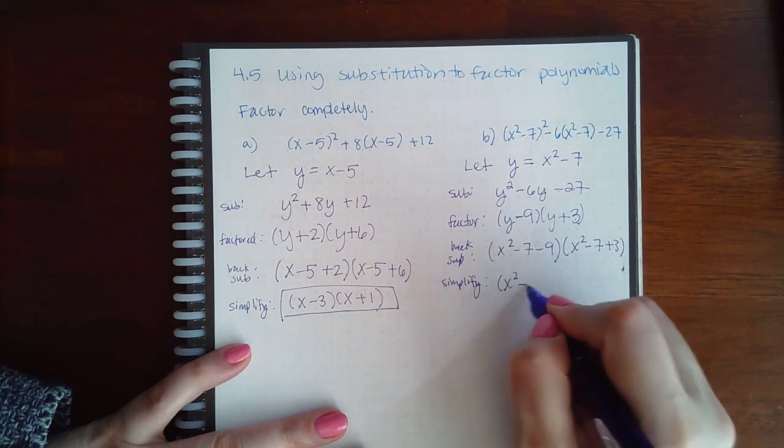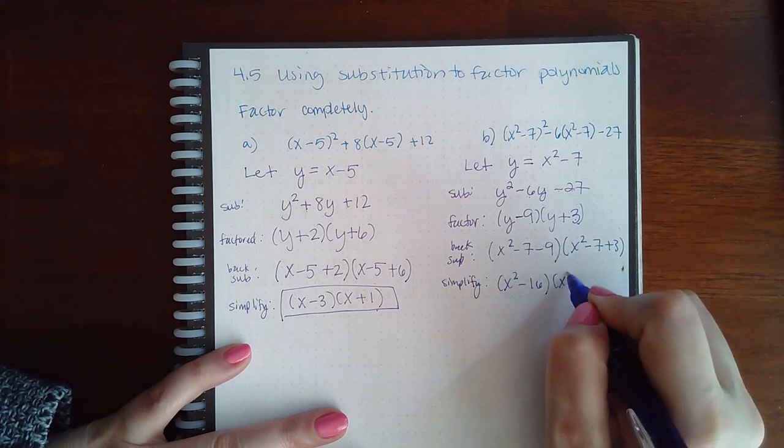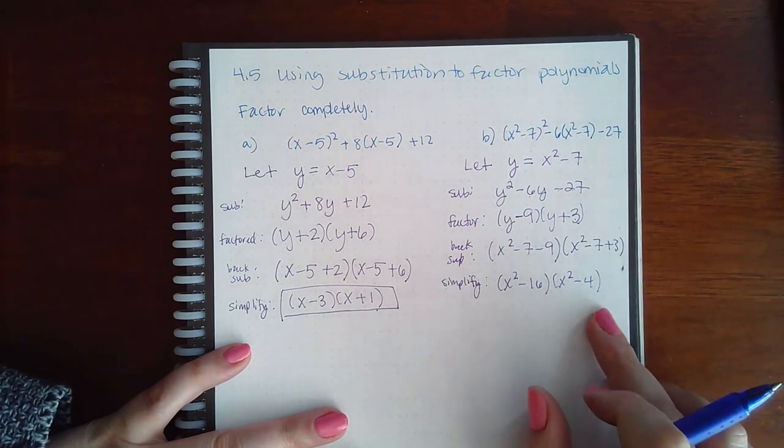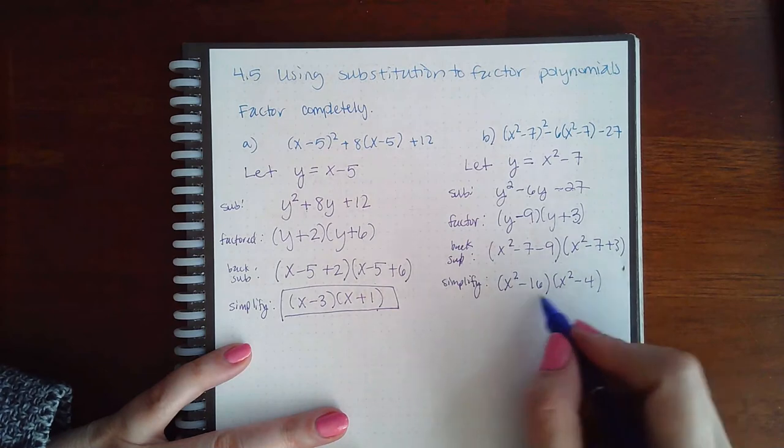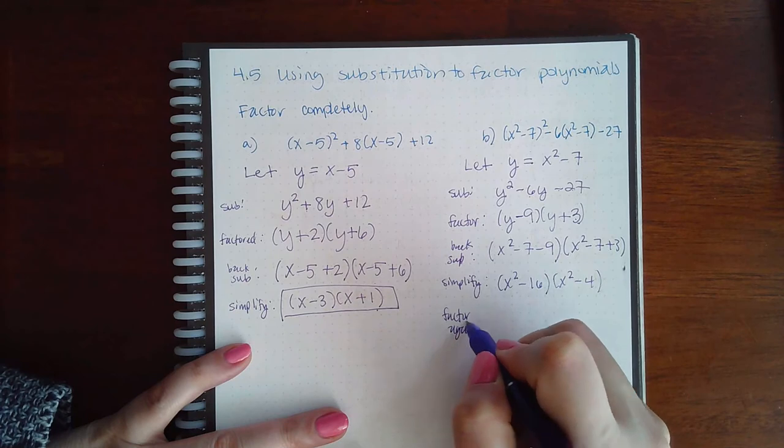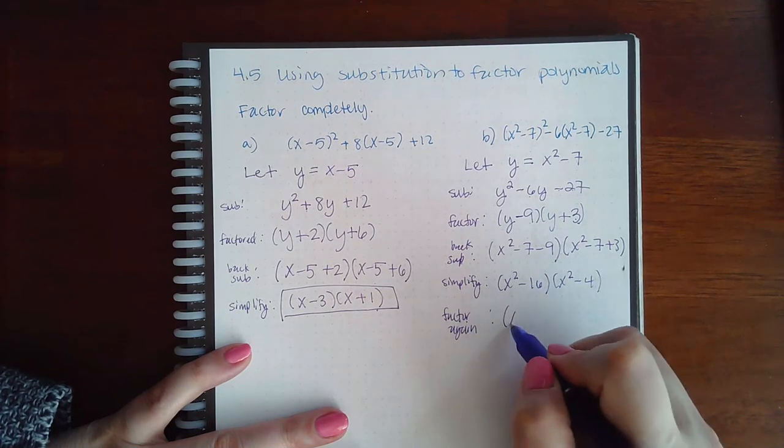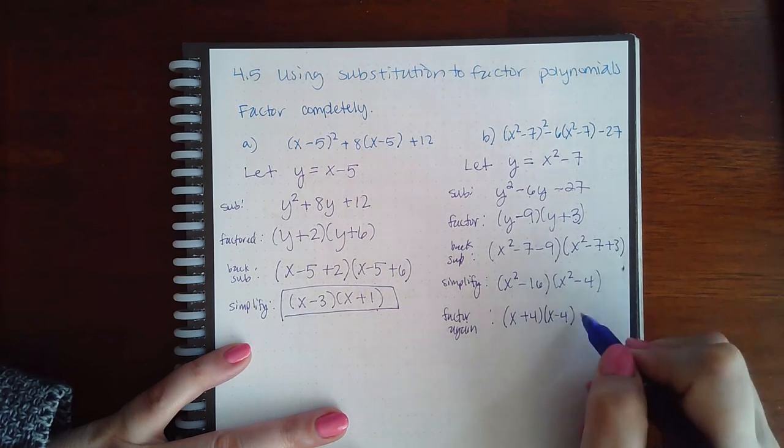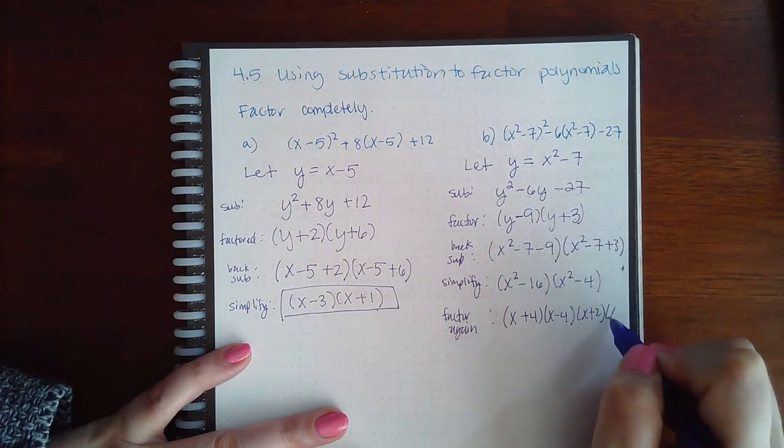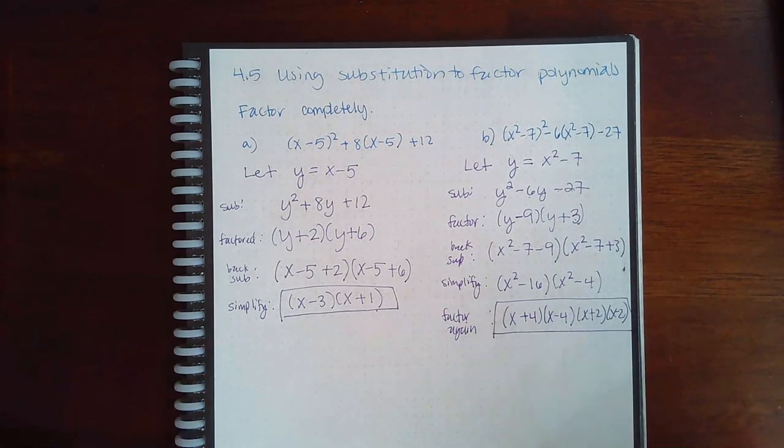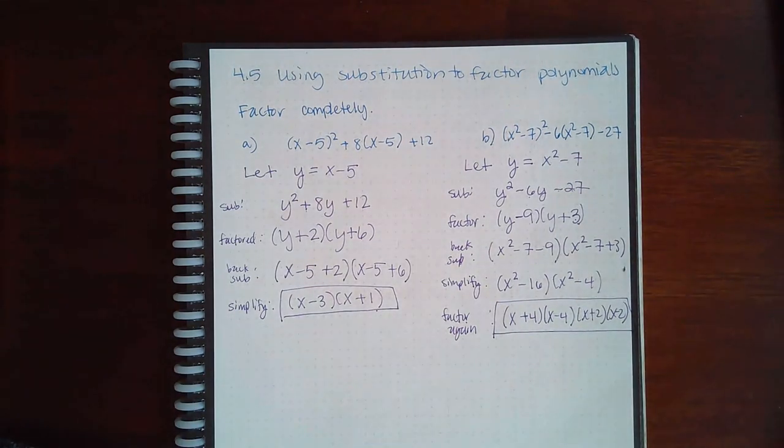I get (x squared minus 16) and (x squared minus 4). However, those are difference of squares, which means they are not factored completely, so I have to factor again in this particular case. So when I factor that again, I get (x plus 4)(x minus 4). Here I get (x plus 2)(x minus 2). And this is the factored completely version of that expression that was given.